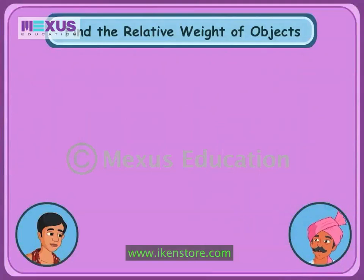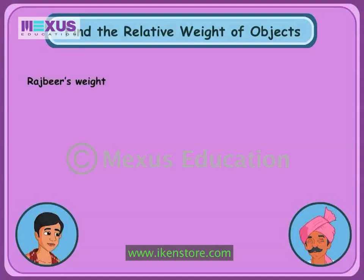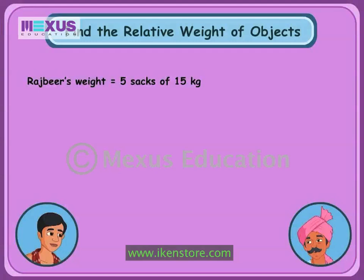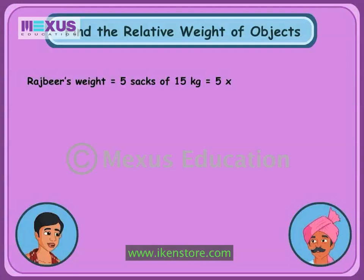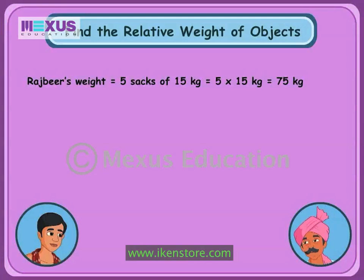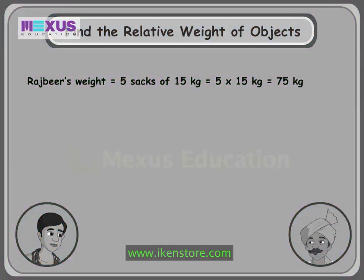75 kilograms? Is J.C. correct, Bhola? Yes, sir. Your weight is 5 sacks of 15 kilograms each, that is equal to 5 multiplied by 15, that is 75 kilograms. So we are donating 75 kilograms of rice and wheat among our people.